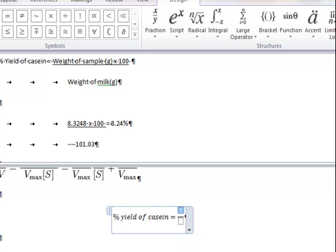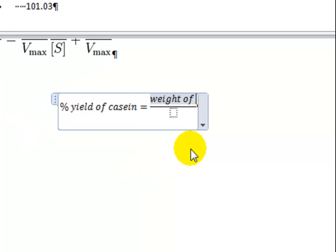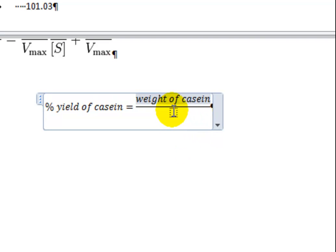So in the top one, we've got weight of - our friend above has put sample, but you need to be more specific than that, so we'll put casein. He's put grams there, which I'm not going to put in just to save a little bit of time, but you probably should yourself. And on the bottom, weight of milk. If you press End, it'll take you to the end of the equation.